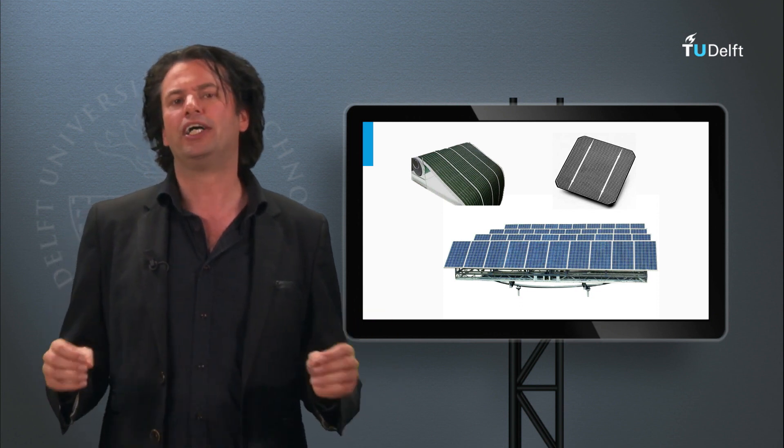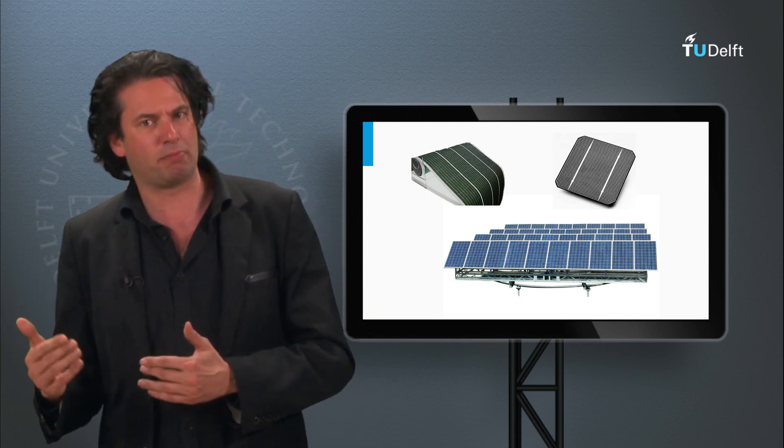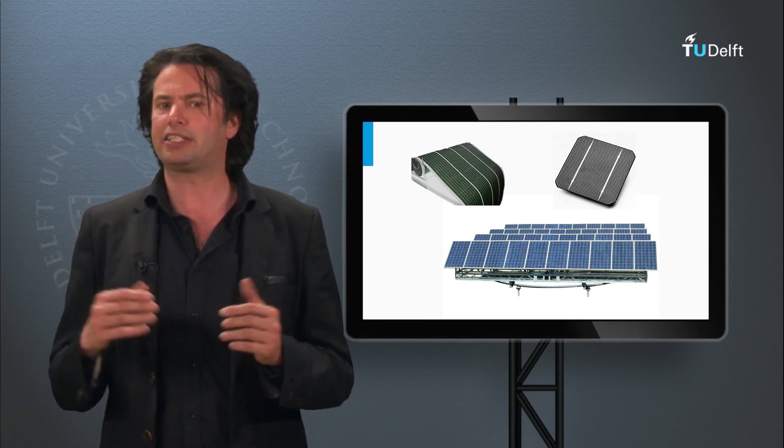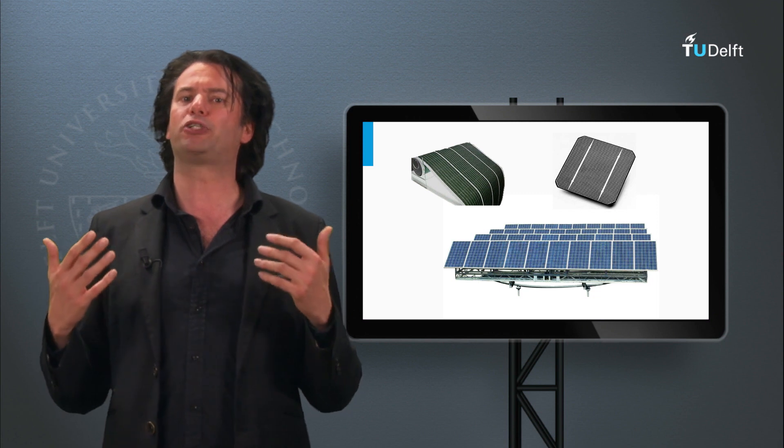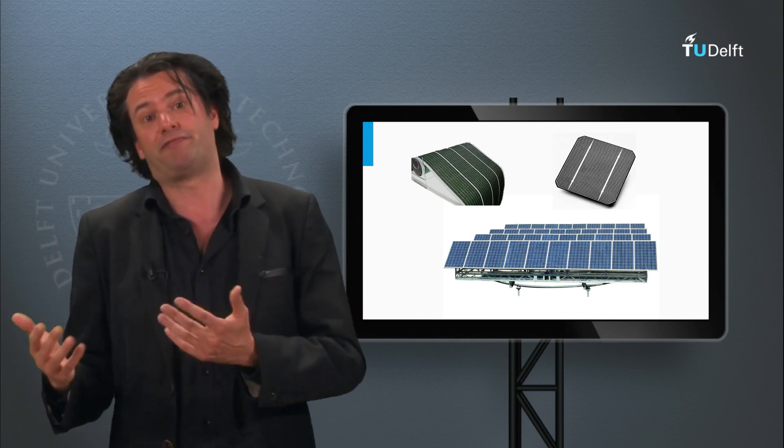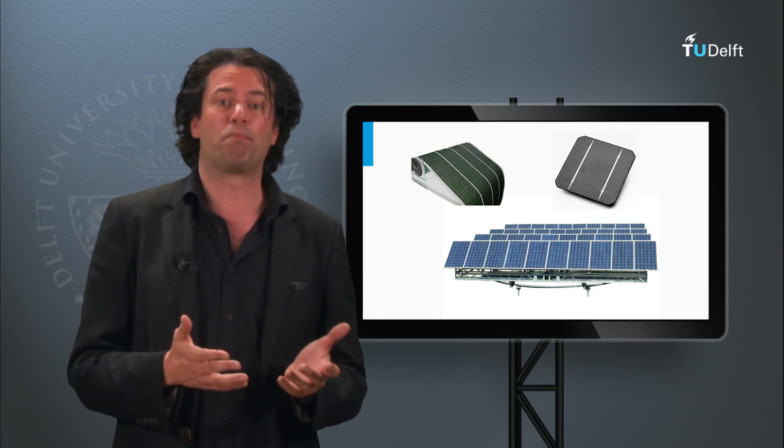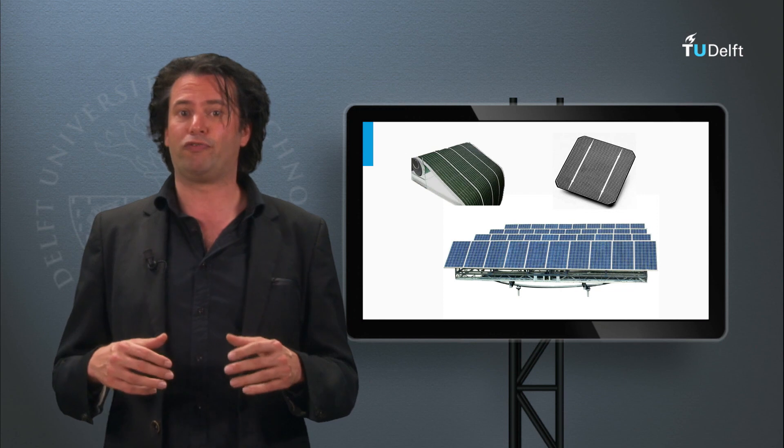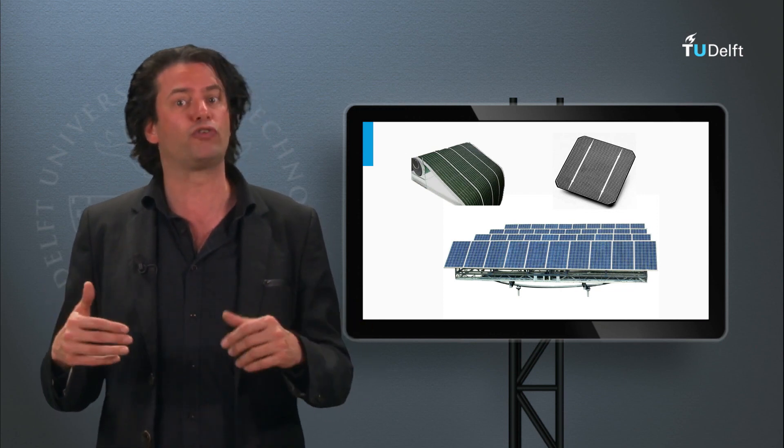As said before, the amorphous silicon technologies show very low temperature coefficients due to their high open-circuit voltage. This means they would show a better response under high temperatures. However, their efficiencies are far lower compared to some of the best crystalline silicon technologies. But conventional crystalline silicon modules are also very bulky.